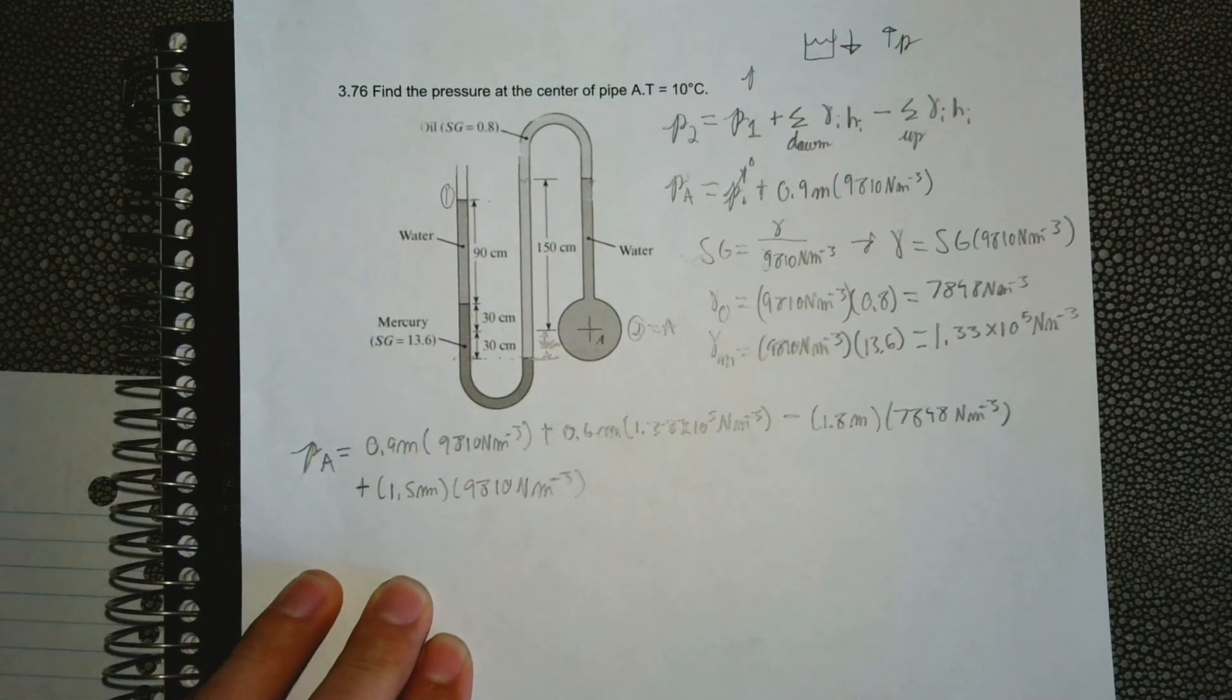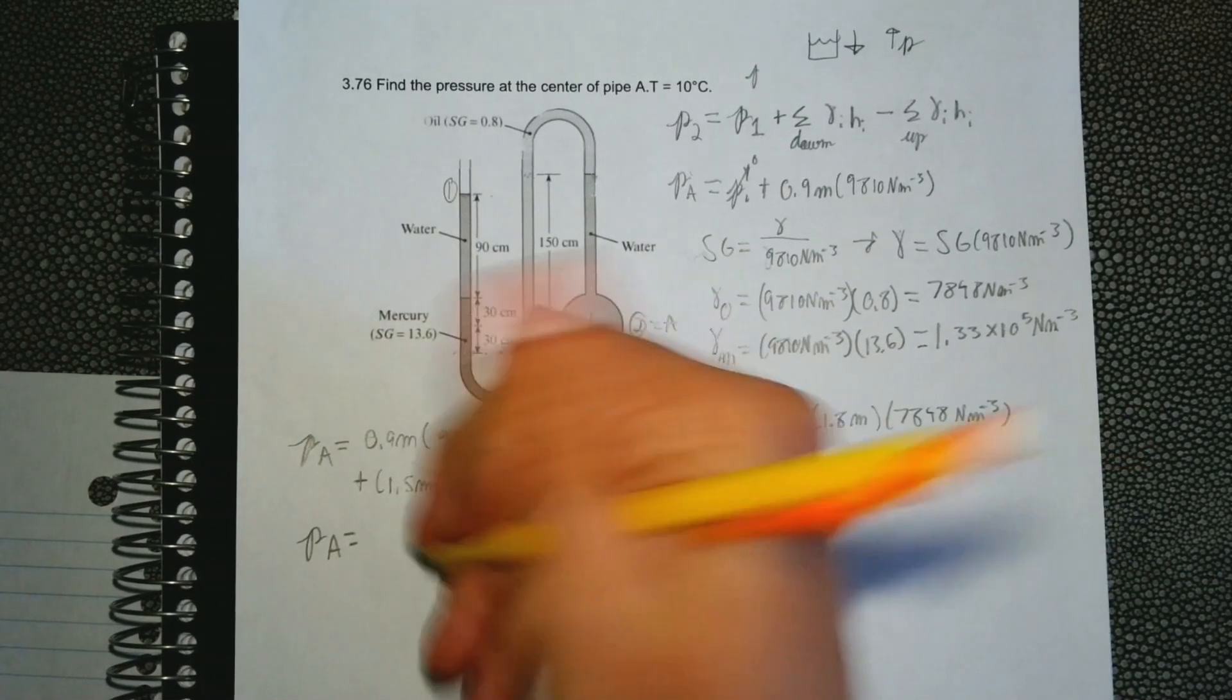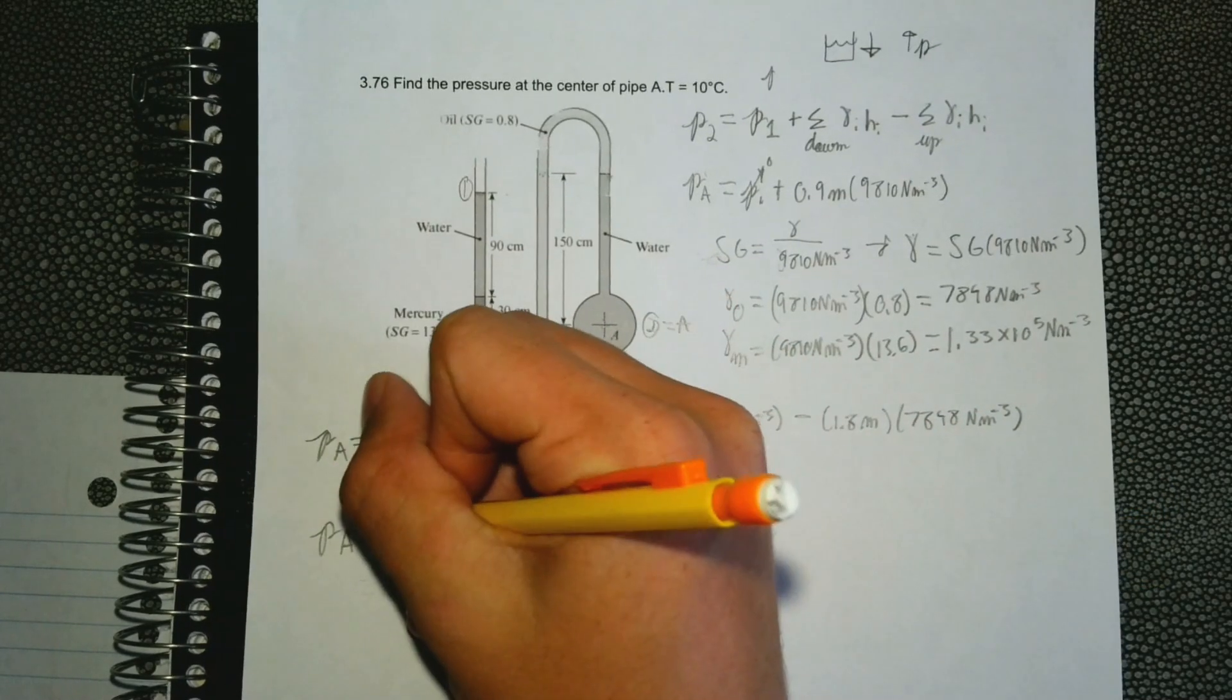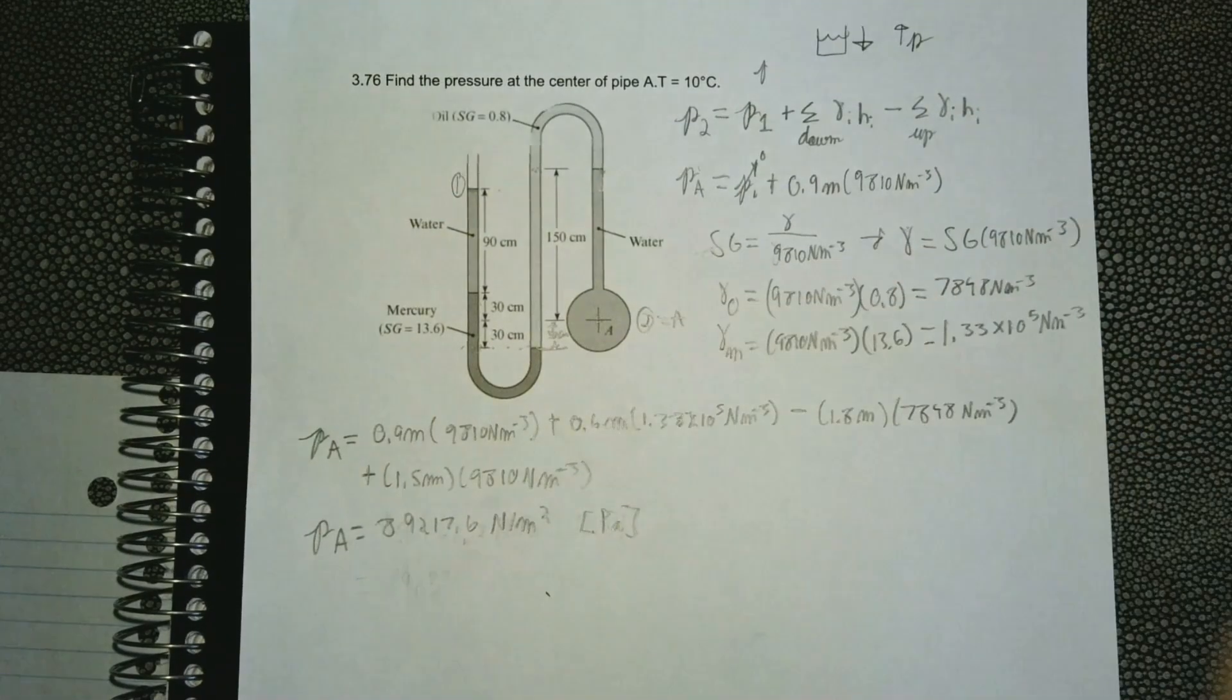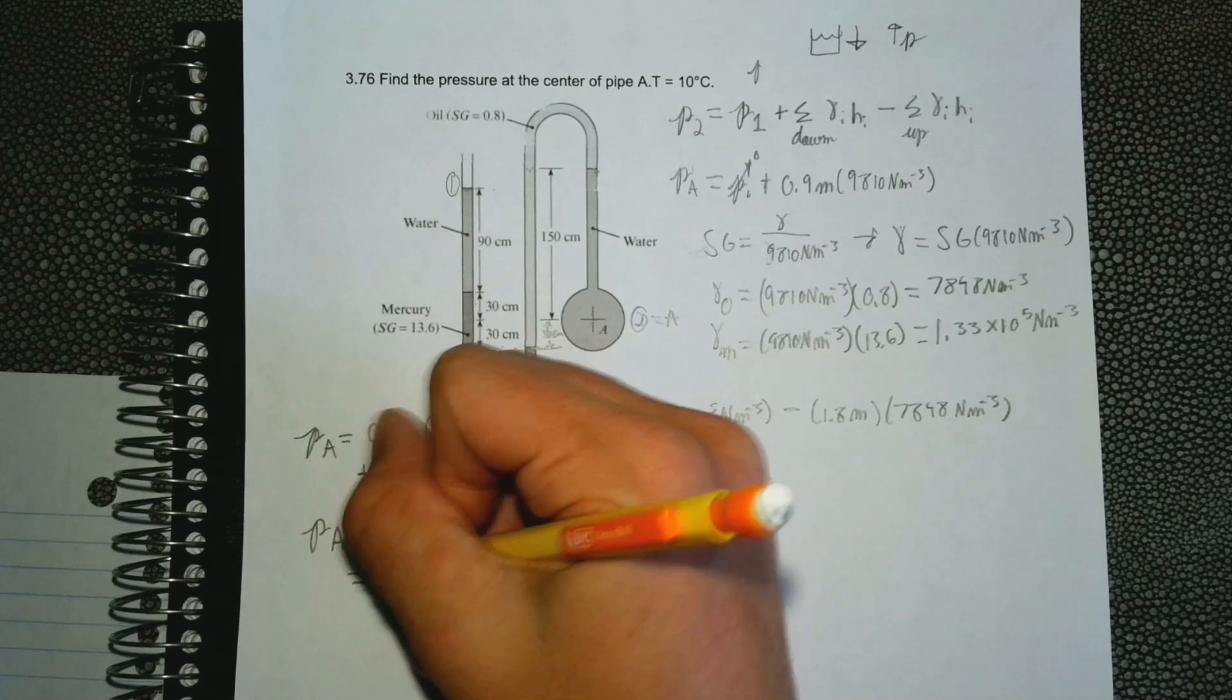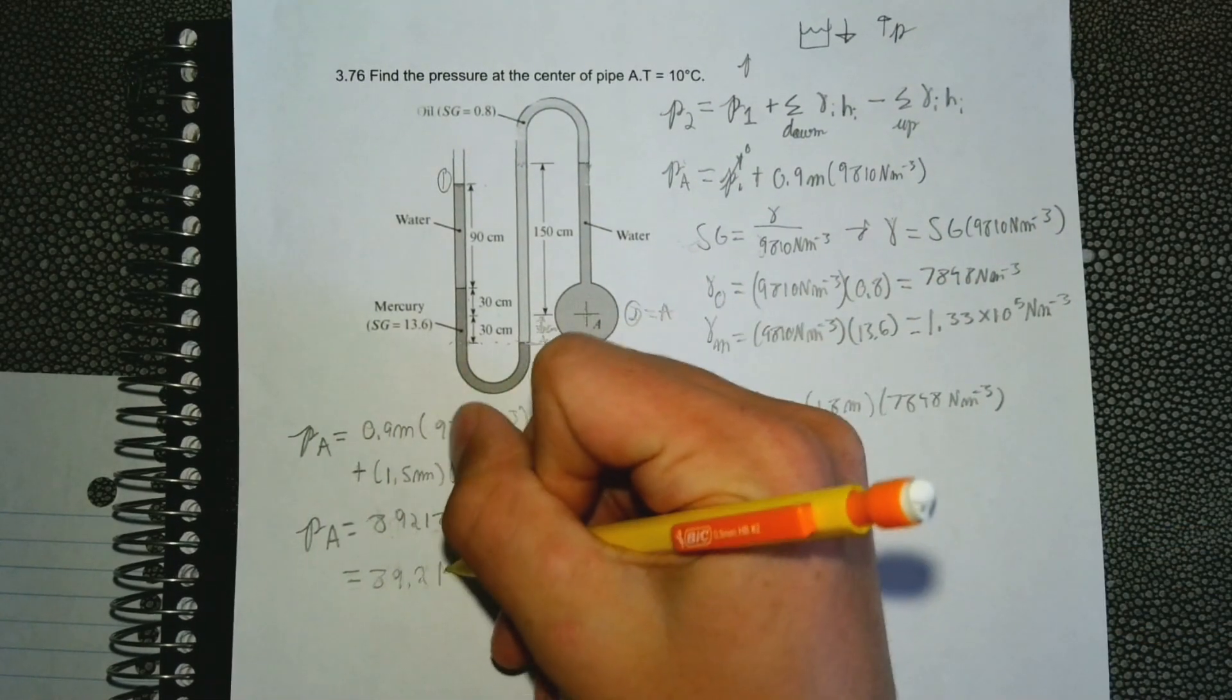If you put that in the calculator, you will get that PA, the pressure at point A, will equal, plug that in your calculator, you get that the value is 89,217.6 Newtons per meter squared. We know Newtons per meter squared is the same thing as Pascals. If you want to convert that to kilopascals, just divide it by a thousand, so 89.2 kilopascals.